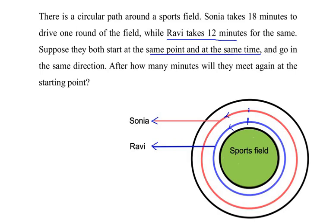So we need to find out what is the time taken when Ravi moves once around the circle and comes back to a position where Sonia is still driving. So we need to find out that time.